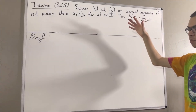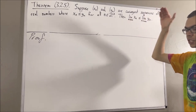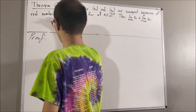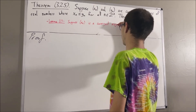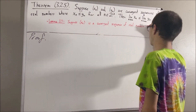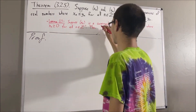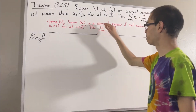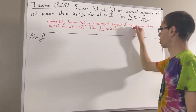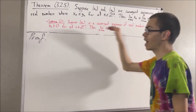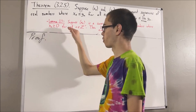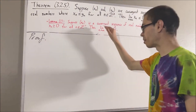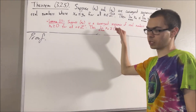Now, in proving this theorem, we are going to use the following preliminary result. Suppose xn is a convergent sequence of real numbers, where xn is greater than or equal to zero for all positive integers n. Then, the limit of xn is greater than or equal to zero.